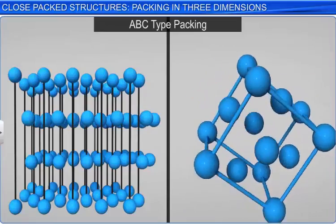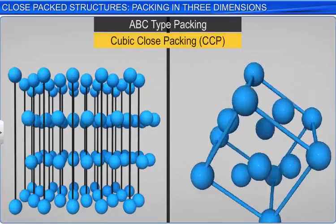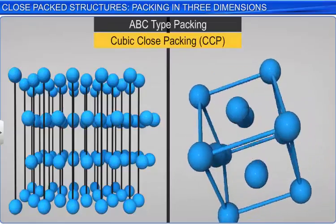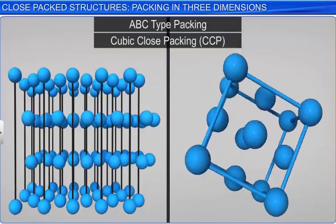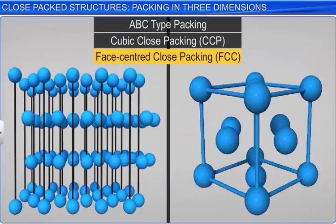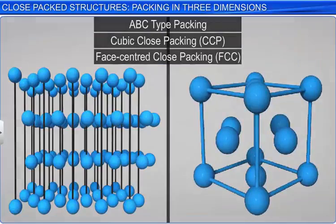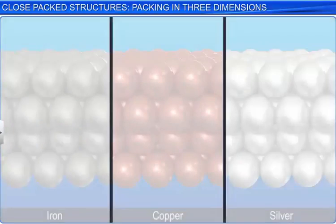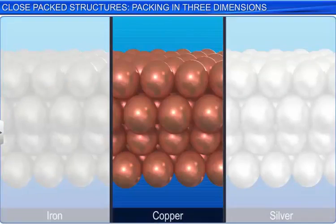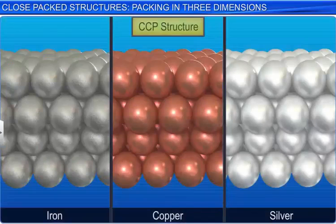It is also called cubic close packing, CCP, or face-centered close packing, FCC. Metals like iron, copper and silver crystallize in CCP structures.